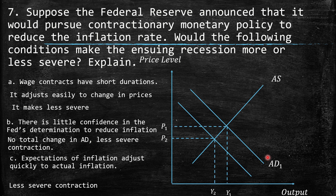Part B: There is little confidence in the Fed's determination to reduce inflation. It will be less severe as well, because there is not going to be a real change in aggregate demand due to expectations — people's beliefs about the central bank. So the aggregate demand will shift to the left, but by less than if people fully believed the central bank's commitment.